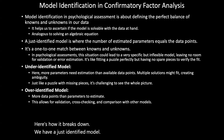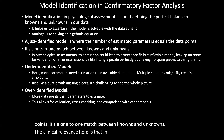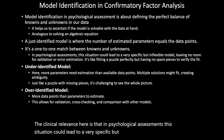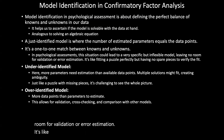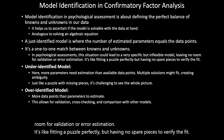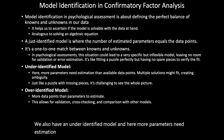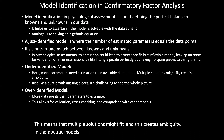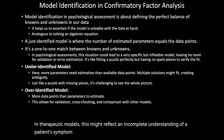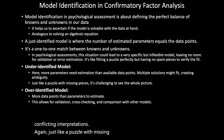We have a just-identified model, where the number of estimated parameters equals the number of data points — a one-to-one match between knowns and unknowns. In psychological assessments, this situation could lead to a very specific but inflexible model, leaving no room for validation or error estimation — it's like fitting a puzzle perfectly but having no spare pieces to verify the fit. We also have an under-identified model, where more parameters need estimation than available data points, meaning multiple solutions might fit and creating ambiguity — like a puzzle with missing pieces, it's challenging to see the whole picture.